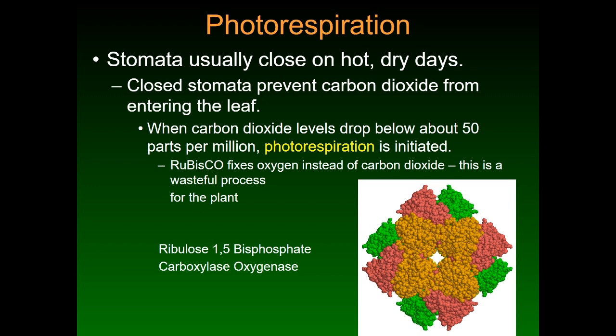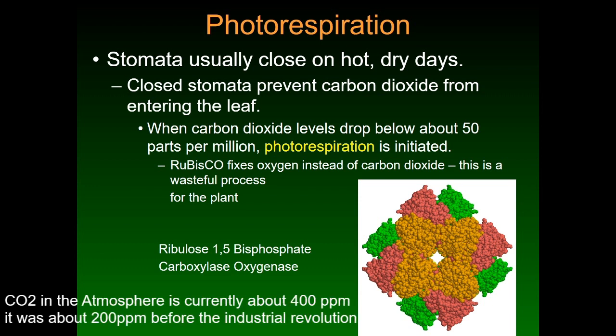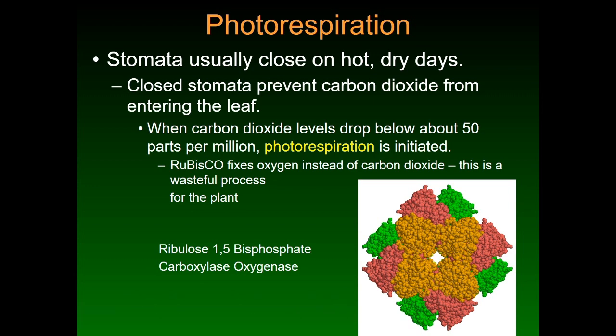Over time, the photosynthetic apparatus will actually use up the carbon dioxide — it will fix all of it into sugars. When you get below about 50 parts per million (currently CO2 levels are around 400 ppm, actually quite elevated from what it used to be), you get photorespiration. The reason for this is that Rubisco — ribulose 1,5-bisphosphate carboxylase oxygenase — can also act as an oxygenase, and when it does that, it will fix oxygen instead of carbon dioxide.